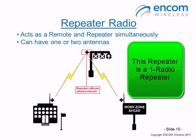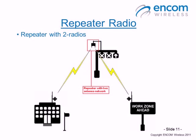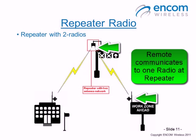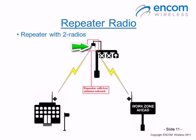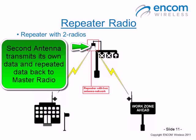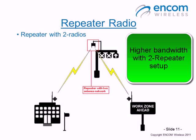A repeater radio can have one or two antennas. The following illustration shows a repeater with two radios. The remote wirelessly communicates to one antenna at the repeater location, and the information is transmitted internally to the second antenna, which then communicates back to the master radio. The benefit of a two-radio repeater setup is that it allows bandwidth on the wireless links to be optimal.